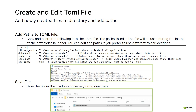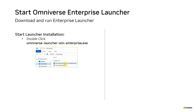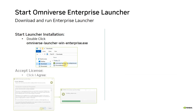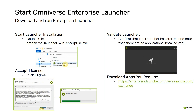Now that you've set up the TOML file and added the folder structure to it, it's time to run the Enterprise Launcher for Windows. Locate and double-click the installer file you downloaded earlier, and accept the license agreement. The installation begins and the Enterprise Launcher starts, but no applications are installed yet. Lastly, download the Omniverse apps you require — the apps are packaged as zip files. Do not extract them.